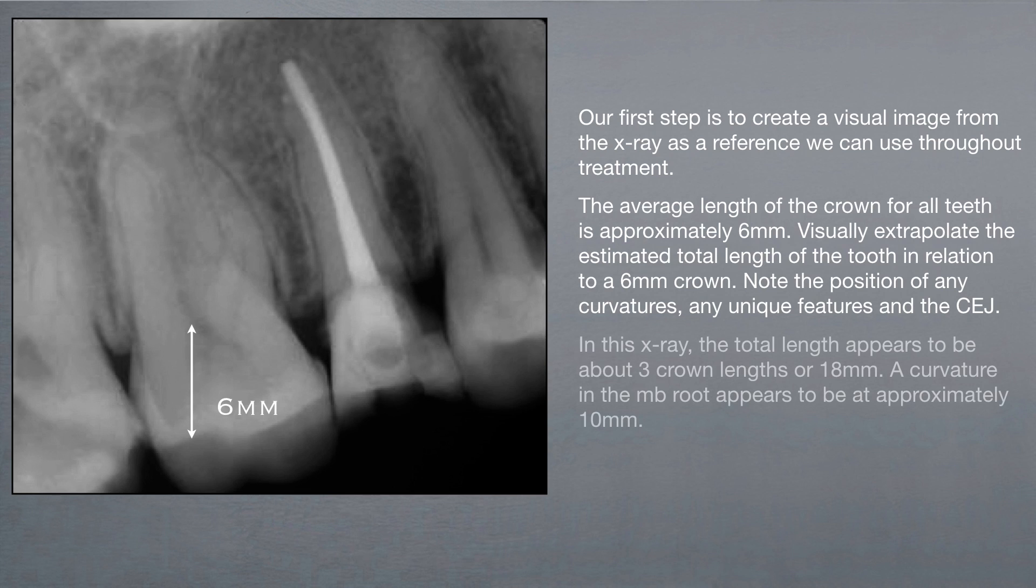In this X-ray, the total length appears to be about 3 crown lengths, or 18 millimeters. A curvature in the MB root appears to be at approximately 10 millimeters.